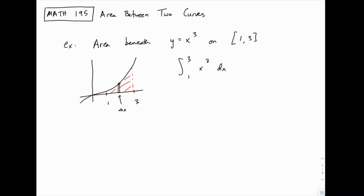Integrating this is fairly straightforward, as most integrals will be in these applications. This is just one-fourth x to the fourth evaluated from 1 to 3, so that would be one-fourth times 81 minus one-fourth times 1 to the fourth, and this turns out to equal 20.